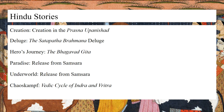And finally, there's the Chaos Kampf, which can be found in the Rig Veda, as a result of Indra slaying the snake Vritra — his archenemy, most commonly referred to as a serpentine beast.